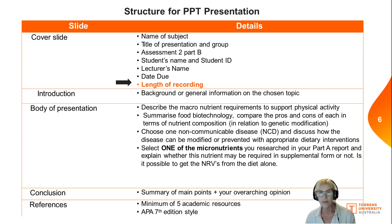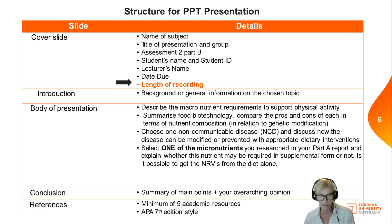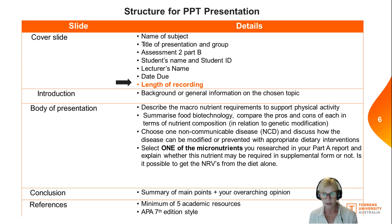Then you have to choose one non-communicable disease — meaning you can't actually catch it — such as diabetes, cancer, heart disease, osteoporosis, or hypertension. Choose just one and talk about how you can modify or prevent it with appropriate dietary practices. Then select one of the micronutrients you wrote about in the first part of your assignment. Just choose one — for example, if you wrote about iron and zinc, just pick one of those.